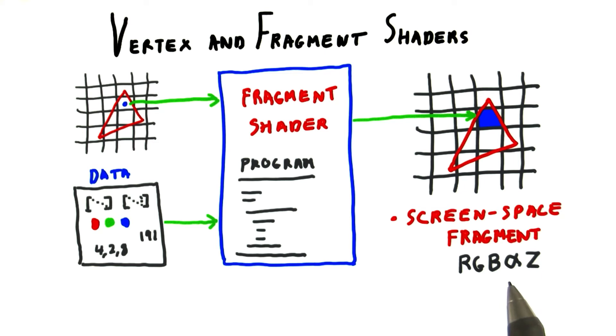The z-buffer test is again a fixed function bit of hardware. Notice how the fragment shader is pretty similar to the vertex shader in the way it functions. In fact,